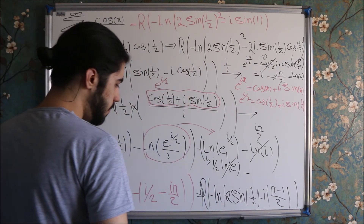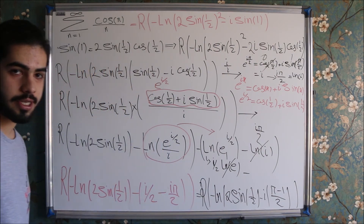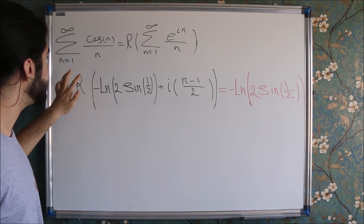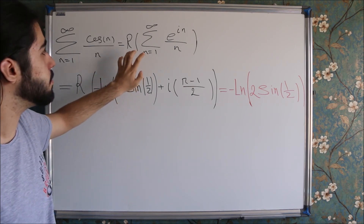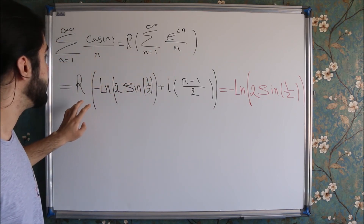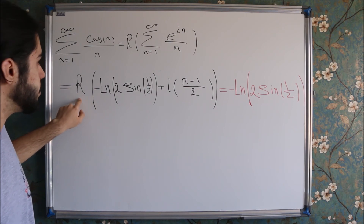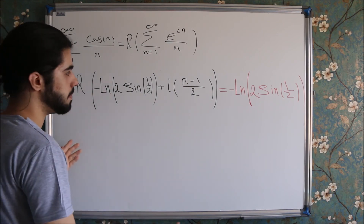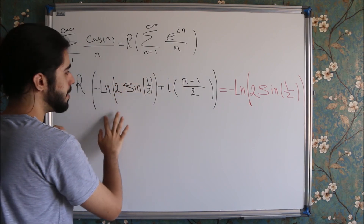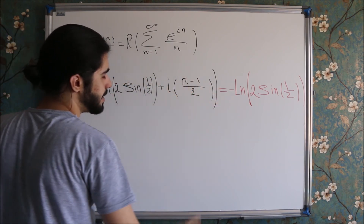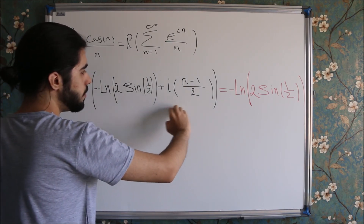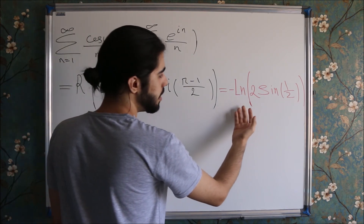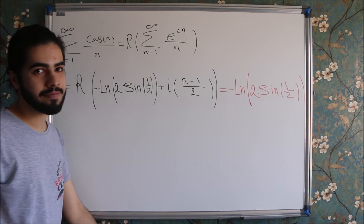Let me clean the board and write the final answer. So here's the last part — just a simple review. From the start we had this series, then we got to the real part of this expression, which was equal to the real part of minus ln of 2 times sine of 1 over 2, plus i times pi minus 1 over 2. The real part is simple to find now — we just take a, and the final answer to this infinite sum is nothing but minus ln of 2 times sine of 1 over 2. That's it guys, hope you enjoyed this video!